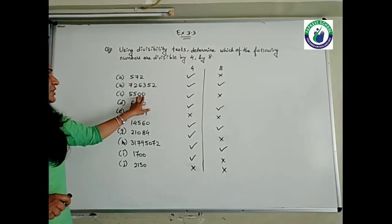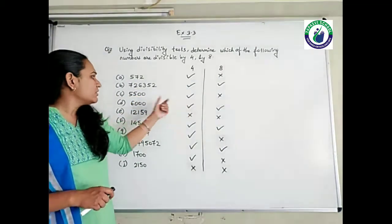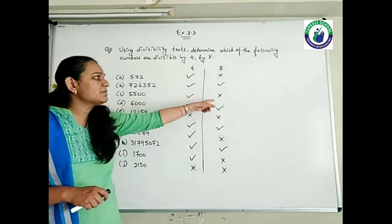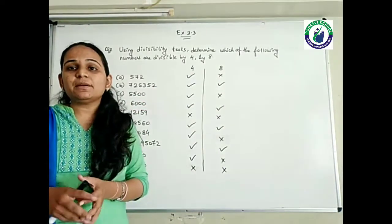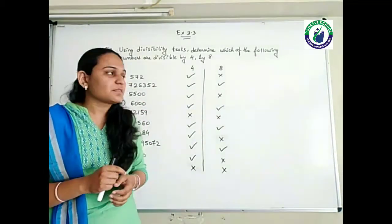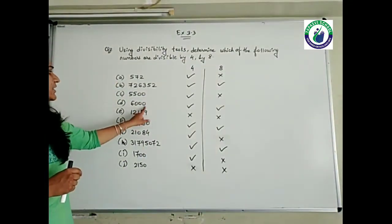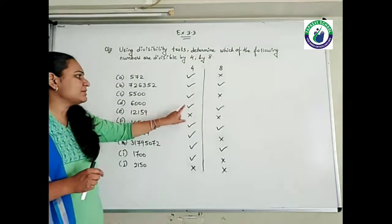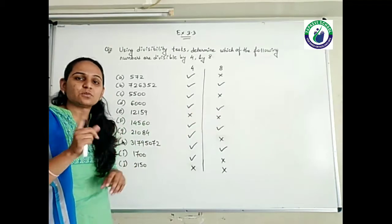Last two digits are 0, so it is divisible by 4. Last two digits are 0 — that is why it is not divisible by 8. For 8 to happen, last three digits should have 0. Last three digits are 0, so yes, it is divisible by 4 as well as 8.